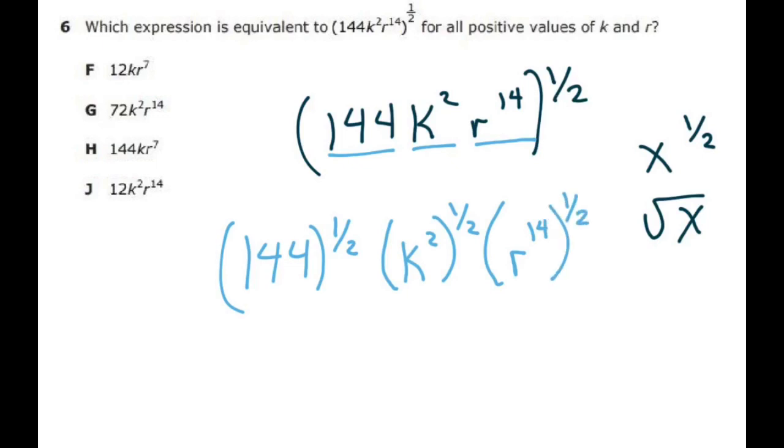Now the main thing you need to know for this one is 144^(1/2) is just the square root of 144, so you could write it as square root of 144 and you should know your perfect squares, so that's going to be 12.